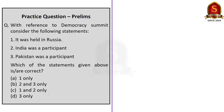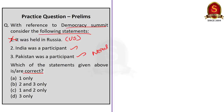Third question: With reference to the Democracy Summit, consider the following statements. Statement 1: It was held in Russia. Statement 2: India was a participant. Statement 3: Pakistan was a participant. From our discussion, the Democracy Summit was held in the United States, so the first statement is wrong. India and Pakistan both attended the Democracy Summit. In South Asia, in addition to India and Pakistan, Nepal also attended. Only Bangladesh did not attend. Therefore the second and third statements are correct, and the correct answer is option B, two and three only.